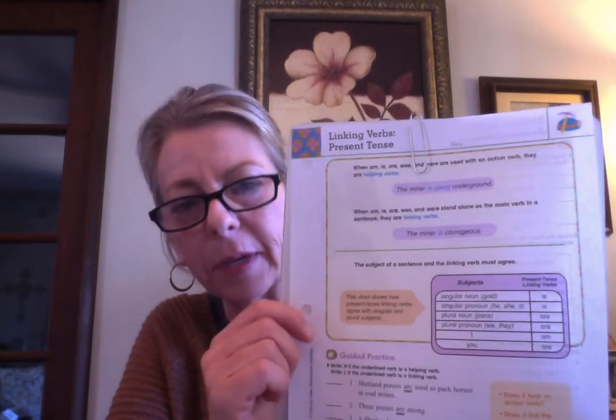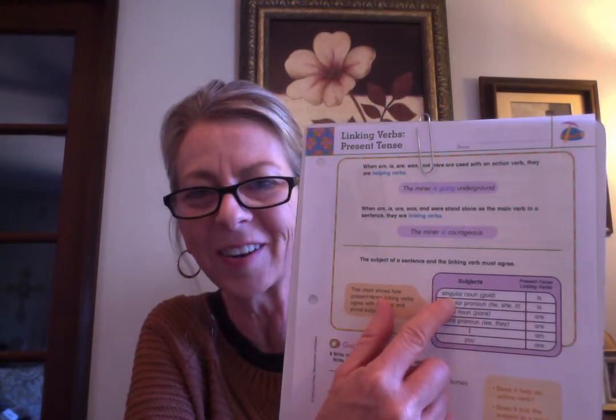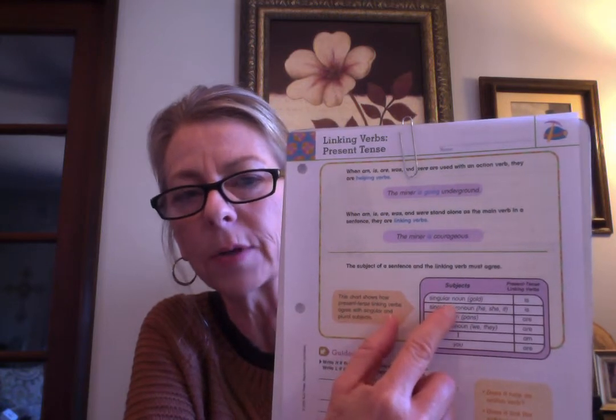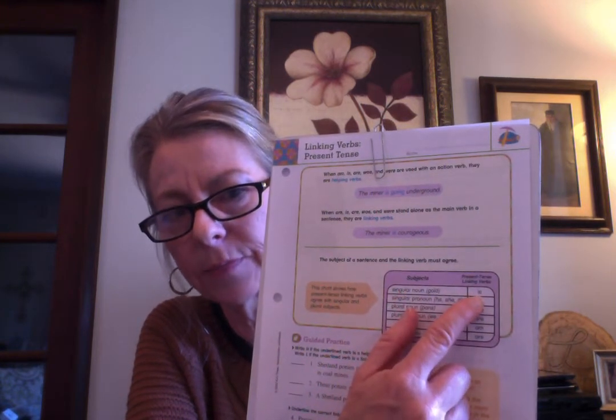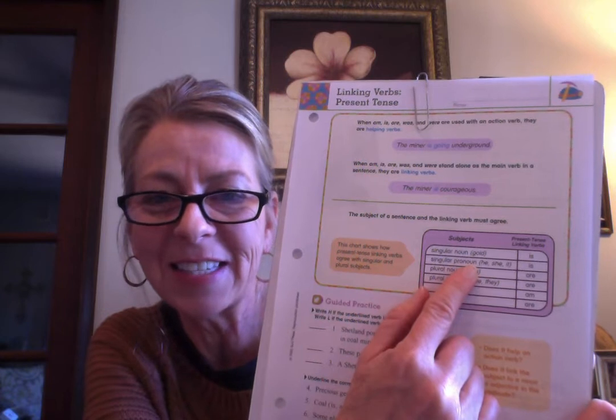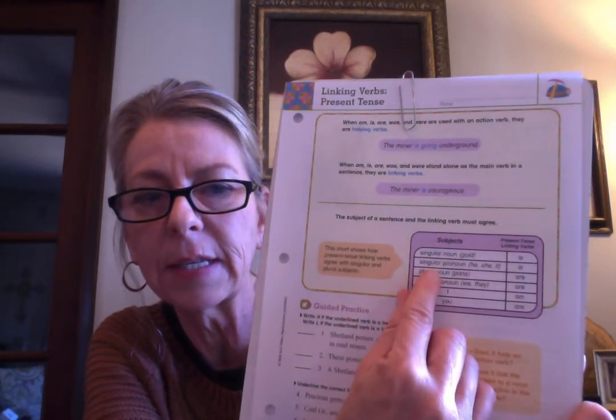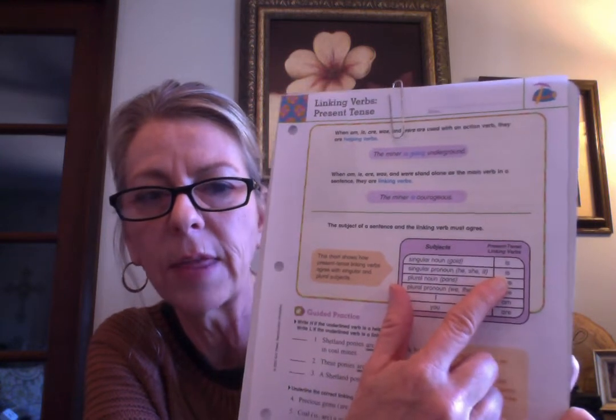The chart reminds us: if we are talking about a singular noun — one person, place, or thing, like the boy, the girl, or the teacher — we use the verb 'is,' whether it's a linking verb or a helping verb. Same for singular pronouns: he, she, it. Whenever we have a singular noun or pronoun, we use 'is' for both linking and helping verbs.